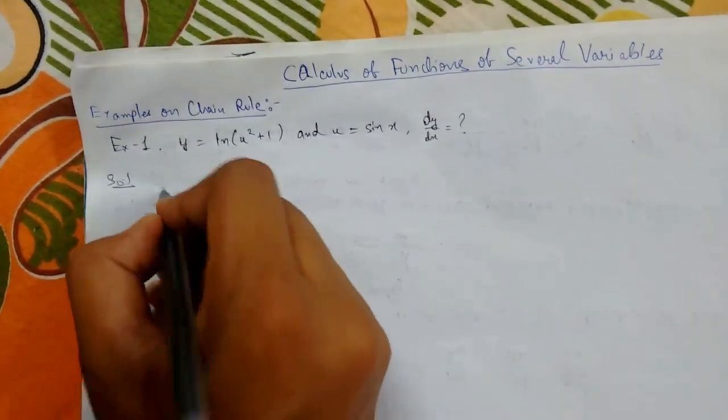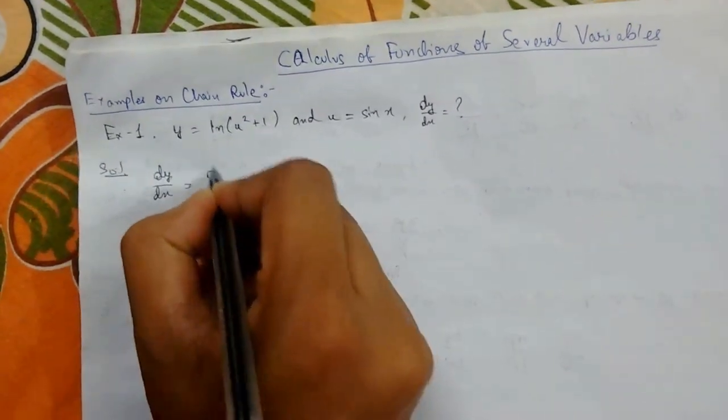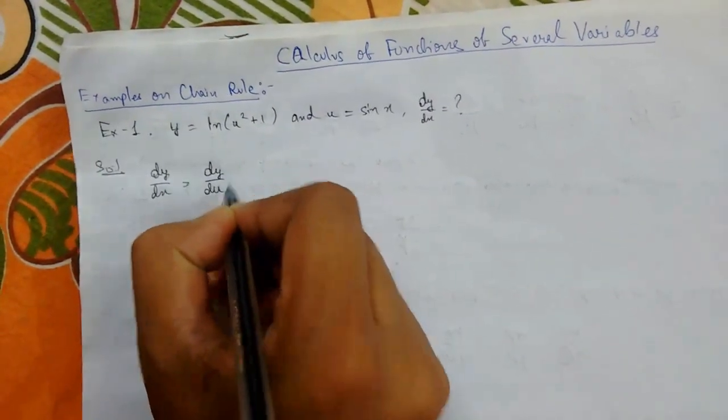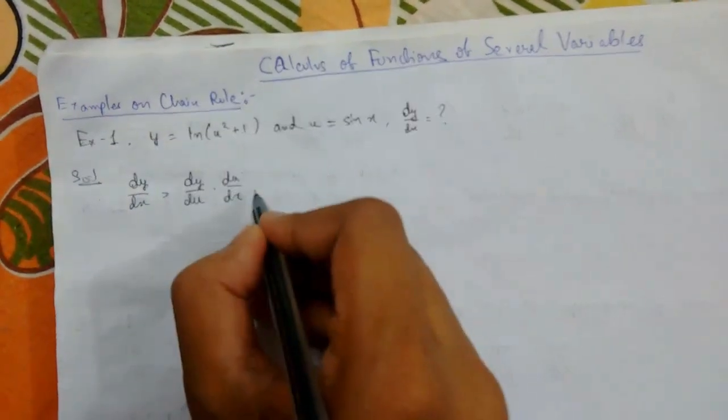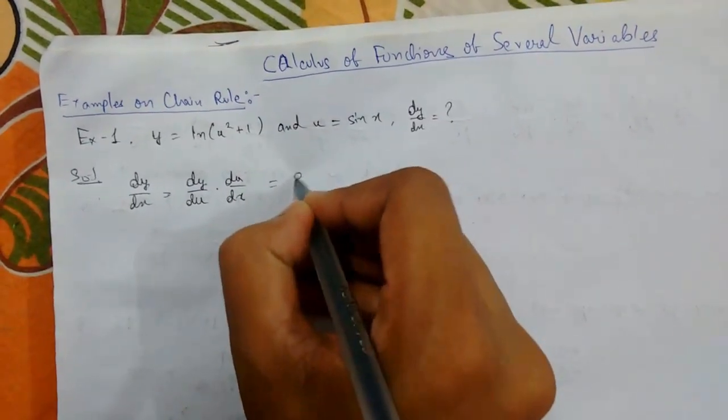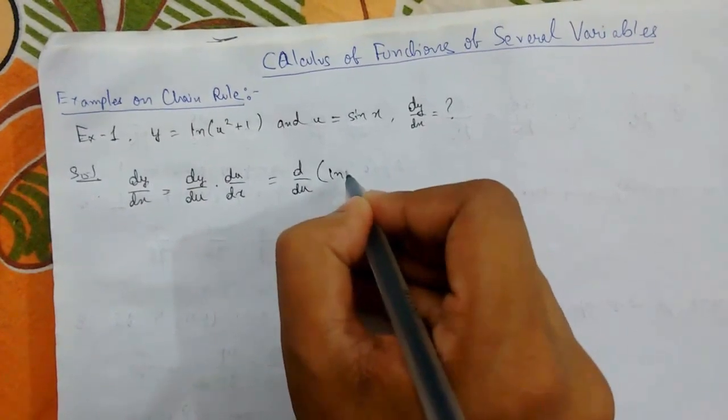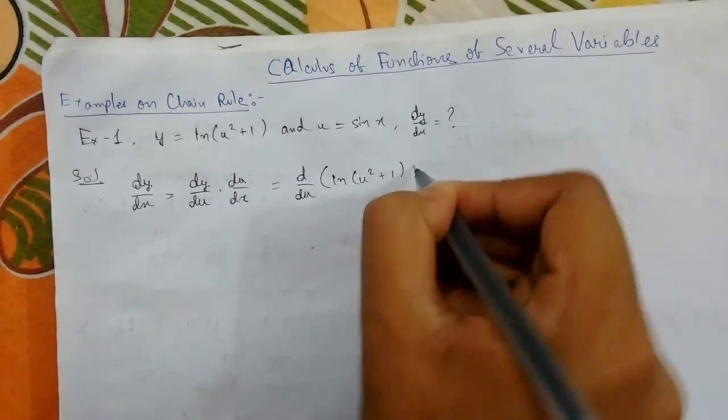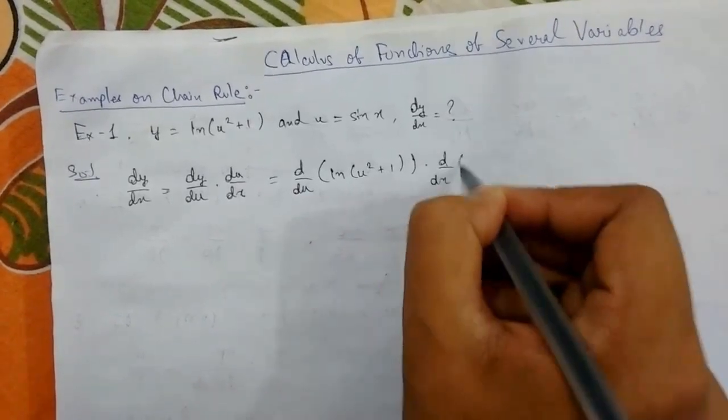Here we will use chain rule. So dy/dx will be equals to dy/du times du/dx. Let us calculate d/du of ln(u² + 1) times d/dx of sin(x).